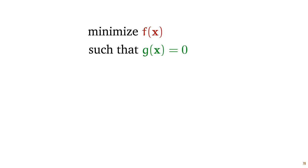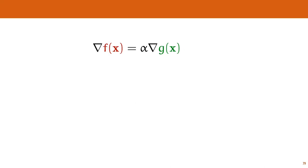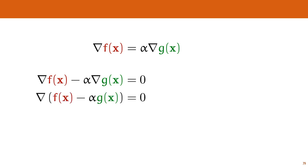To summarize: if we rewrite our problem so that we have some function f whose output we want to minimize, under the constraint that some other function g is equal to 0, then we can use this principle to find our solution. The contour lines of f and g are tangent where the gradients of f and g point along the same line. We formalize this as: there must be some alpha such that the gradient of f equals the gradient of g times alpha. We can rewrite this to something that must equal 0, move the gradient symbol out in front, and this tells us we're looking for the point where the gradient of some function combining f and g is equal to 0.